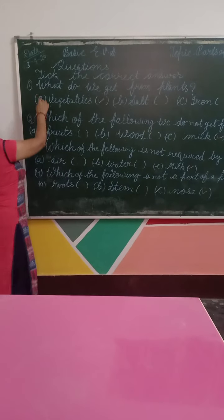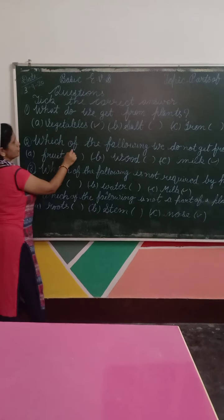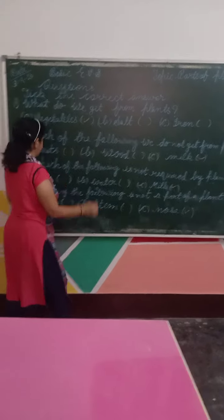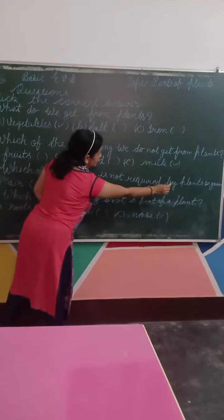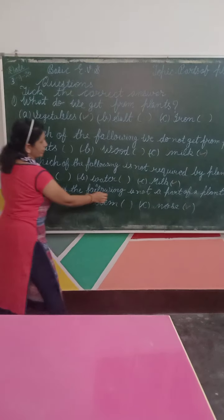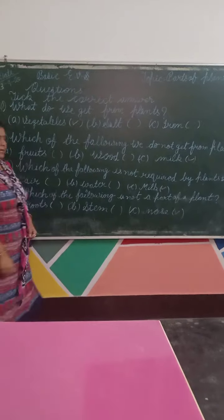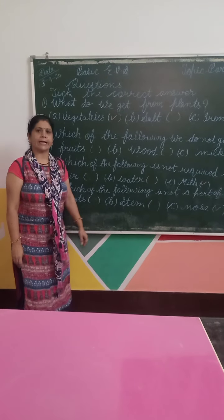Now we revise it. What do we get from plants? Vegetables. Which of the following we do not get from plants? Milk. Which of the following is not required by a plant to grow? Milk. Which of the following is not a part of a plant? Nose. Understood students? Now you write in your notebook.